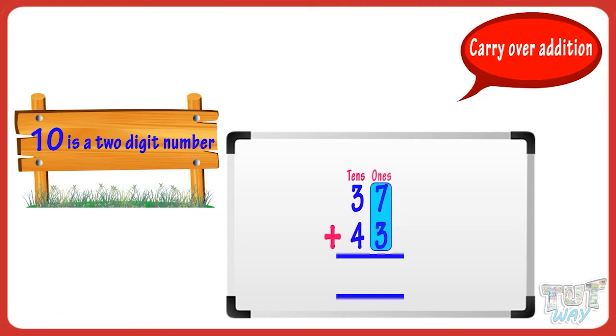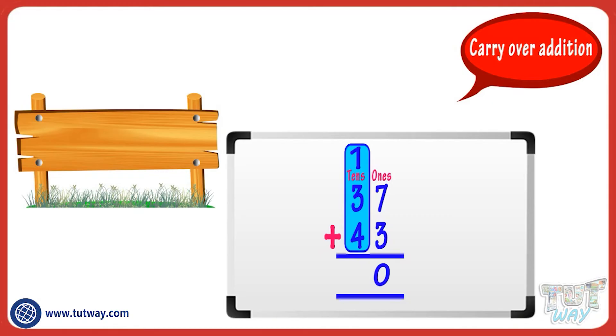Carry over the tens digit and write it above the tens digit like this. Now add the three digits in tens place: that is 1, 3, and 4.